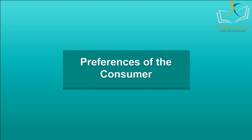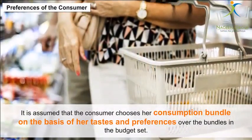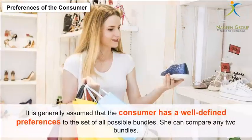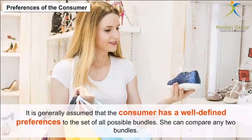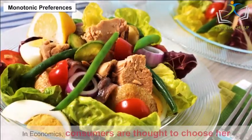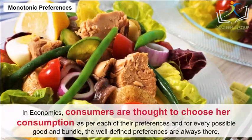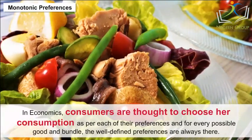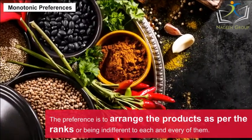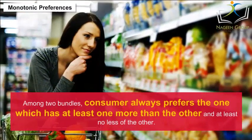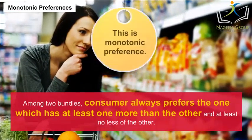Preferences of the Consumer. It is assumed that the consumer chooses her consumption bundle on the basis of her tastes and preferences over the bundles in the budget set. It is generally assumed that the consumer has well-defined preferences over the set of all possible bundles. Consumers are thought to choose their consumption as per their preferences for every possible good and bundle. The preference is to arrange the products as per ranks or being indifferent to each of them. Among two bundles, the consumer always prefers the one which has at least one more than the other and at least no less of the other. This is monotonic preference.